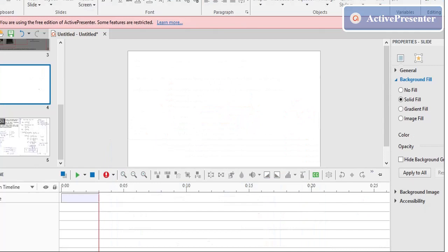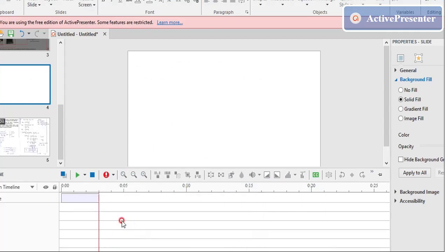Looking at a figure of a sedimentation tank: water enters at the inlet, the slope is arranged so water flows slowly across, particles settle and are collected at the bottom, and a washout valve removes the settled sludge. The outlet allows treated water to exit.